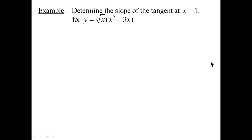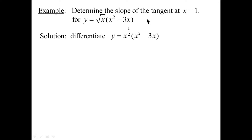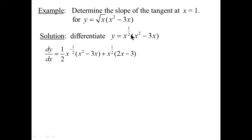Let's determine the slope of the tangent at x = 1 for another function. Yes, we could multiply the root x in, but we're learning to use the product rule. Solution: note that root x is really x^(1/2). Here we have a product of functions. dy/dx is the first thing primed, so it'll be (1/2)x^(−1/2) — which we learned in the previous lesson — times the second thing. Plus the second thing primed, which is 2x − 3, times the first thing.